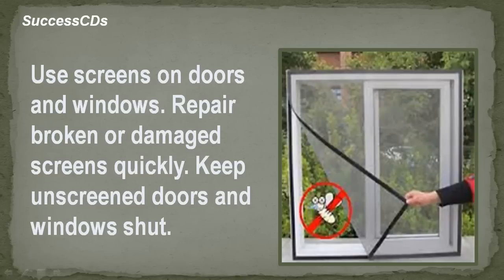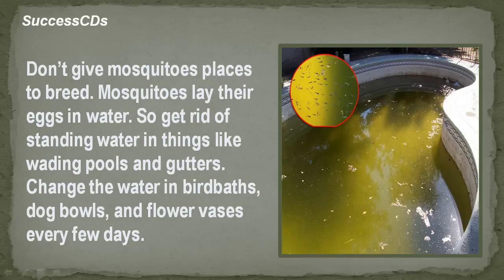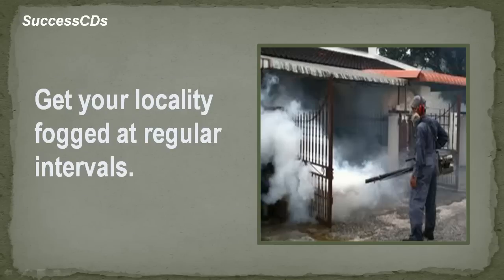Use screens on doors and windows. Repair broken or damaged screens quickly. Keep unscreened doors and windows shut. Don't give mosquitos places to breed — mosquitos lay their eggs in water, so get rid of standing water in things like wading pools and gutters. Change the water in bird baths, dog bowls and flower vases every few days. Get your locality fumigated at regular intervals.